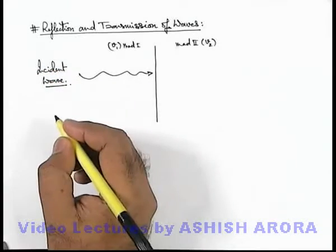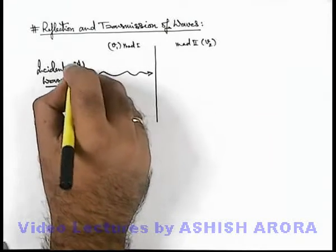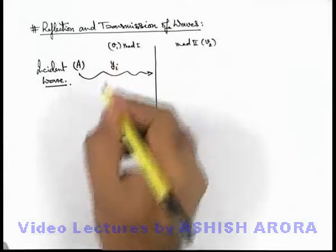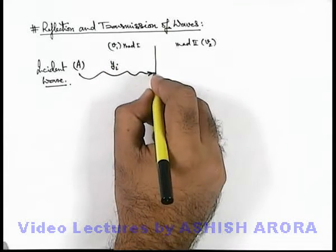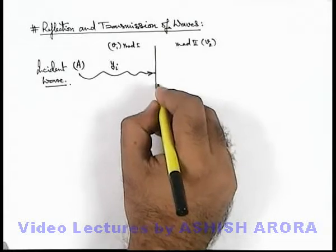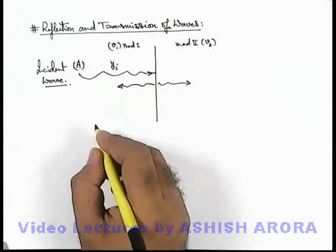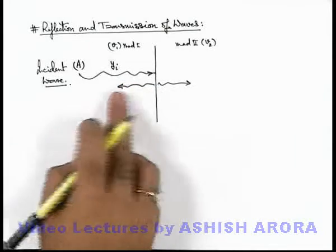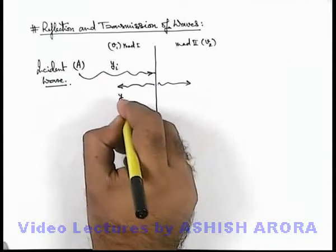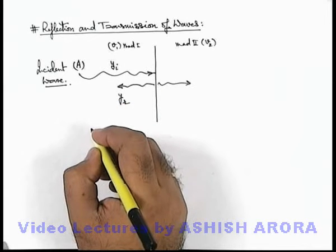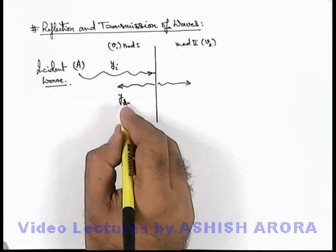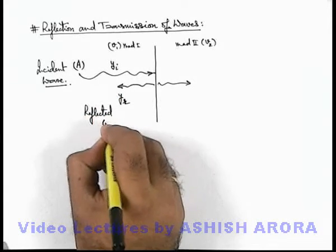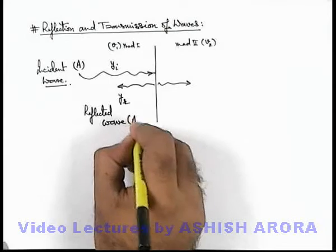Say the incident wave has an amplitude Ay, and the displacement of medium particles can be given as y-i. After the incident wave hits the boundary, the medium boundary oscillates and spreads out waves in both directions. The part of the wave which bounces back into the same medium is called the reflected wave, having displacement represented by y-r, and it is of amplitude Ay-r.